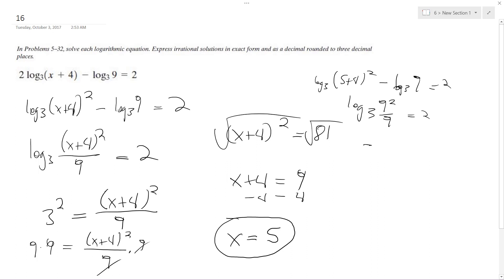Yeah, that works out because it's just 9. Well, I might as well do the whole thing now. Log base 3 of 9 equals 2. 3 squared equals 9. So yeah, it checks out. So x equals 5.